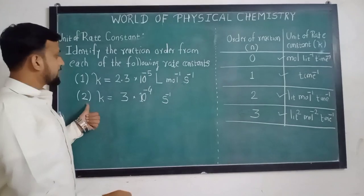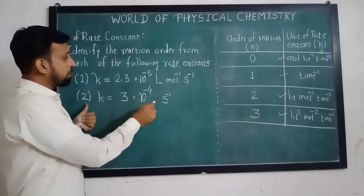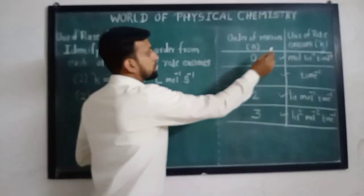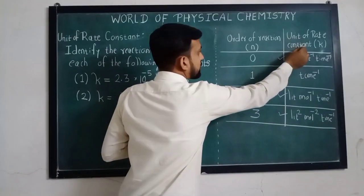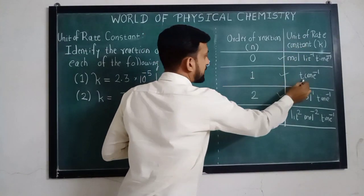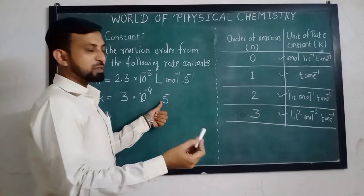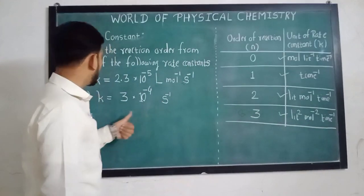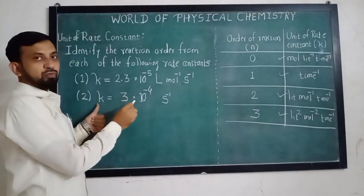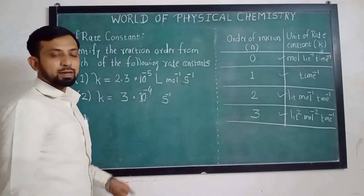In the second case, K is given as 3 into 10 to the minus 4 per second. The unit of rate constant for a first order reaction is per time. Here it is per second, that is time expressed in seconds. Therefore, we can say that in the second case, the order of reaction is first order.